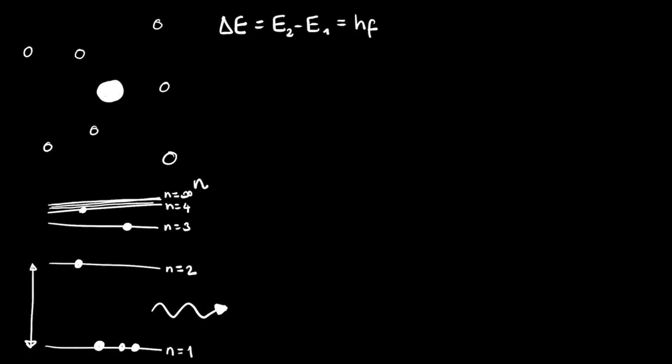We talked about what hf was in the last video. h is simply Planck's constant, and f is the frequency. And we also showed in the last video that this can also be written as hc over lambda. So this is the energy difference between two energy levels, and it's equal to the energy of a given off photon.